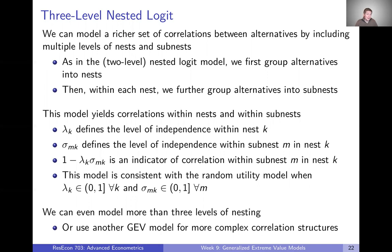When we talked about the nested logit model, we could think about it as a two-level model: one level with nests, and below the nests, the alternatives. But we could group alternatives further into sub-nests, giving us three levels — nests, sub-nests, and then alternatives at the lowest level. Nests k will have a lambda parameter that defines its level of independence, just like the standard nested logit model.